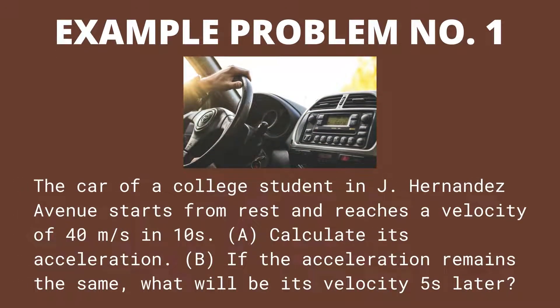Example problem number 1: The car of a college student in J. Hernandez Avenue starts from rest and reaches a velocity of 40 meters per second in 10 seconds. (A) Calculate its acceleration. (B) If the acceleration remains the same, what will be its velocity 5 seconds later?